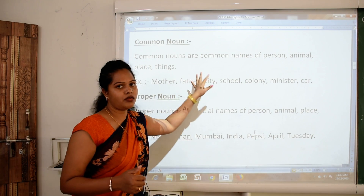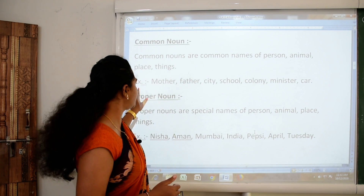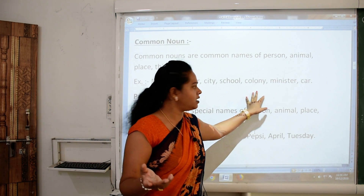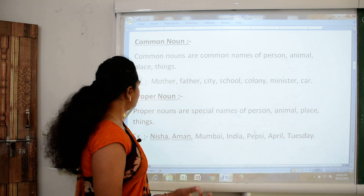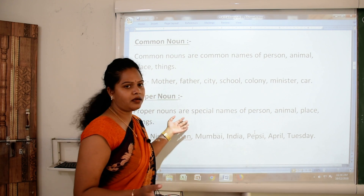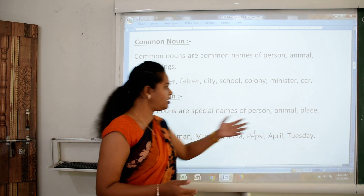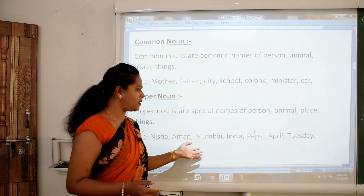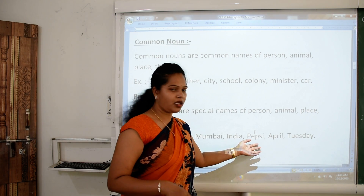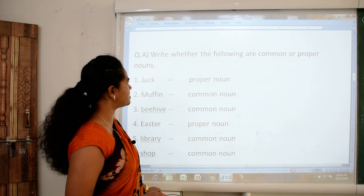Common nouns are common names of person, animal, and things. For example: mother, father, city, school, colony, minister, car — these are common nouns. Proper nouns are special or specific names of person, animal, places, and things — like Nisha, Amman, Mumbai, India, Pepsi, April, and Tuesday. Let's solve some exercises.